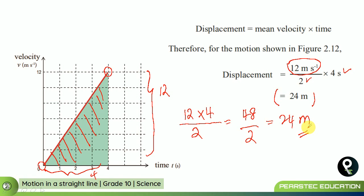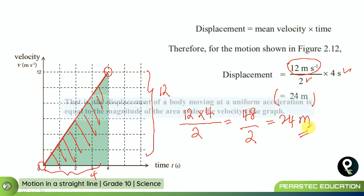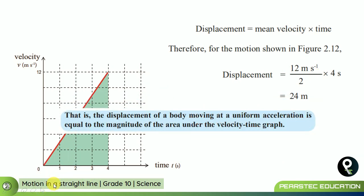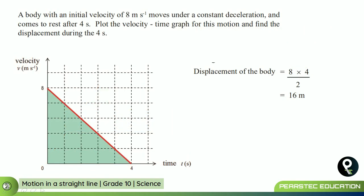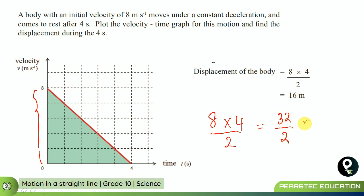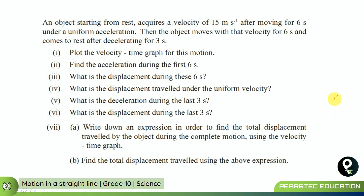The displacement of a body moving under uniform acceleration equals the area under the velocity-time graph. Here there is a deceleration happening. We apply the same method: 8 multiplied by 4 divided by 2 equals 16 meters. So it is very easy to find the displacement of the body when the velocity-time graph is plotted.